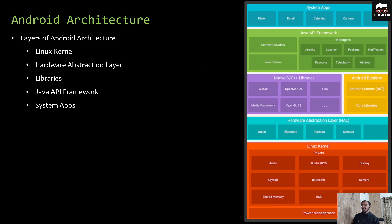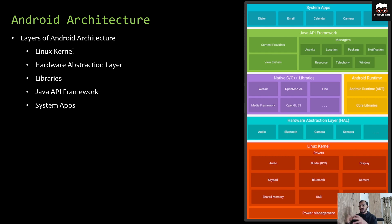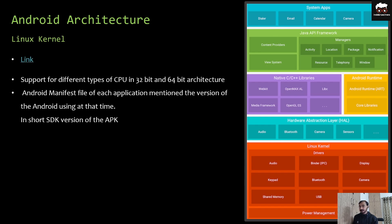That is a basic working idea of the Android application. If we talk about the Android architecture, there are mainly five layers. The first, at the very bottom, is the Linux Kernel. The second is the Hardware Abstraction Layer. The third is Libraries. The fourth is the Java API Framework. And the last, at the top, is System Apps. I'll discuss each layer one by one.